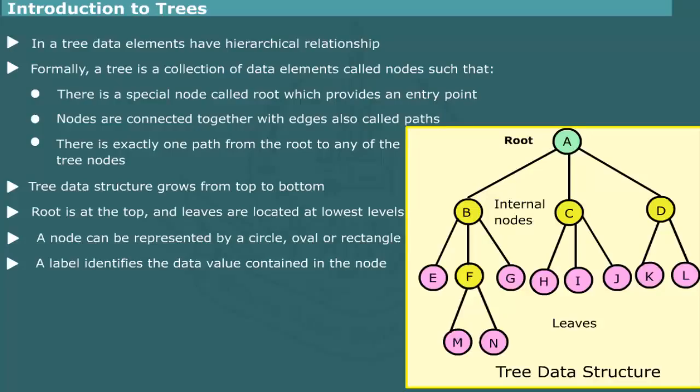In this structure, A is root node. E, M, N, G, H, I, J, K, L, R are leaves. All other nodes are the internal nodes.